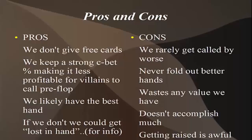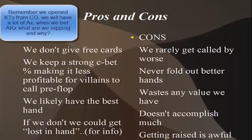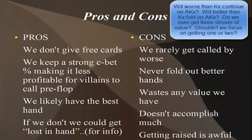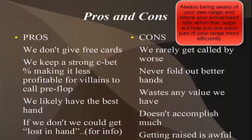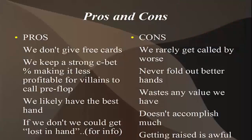Let's look at the cons, and then I'll tell you what I do. The cons: we very rarely get called by worse. We're in late position opening at a six-max table, and we're probably going to have a lot of aces in our range. Not only are we going to be perceived as having a lot of ace-x hands, but we really literally will have a lot of ace-x hands. So when we c-bet this, are we really c-betting for value? Because if we're c-betting for value, it's kind of like we're over-representing our value hand.